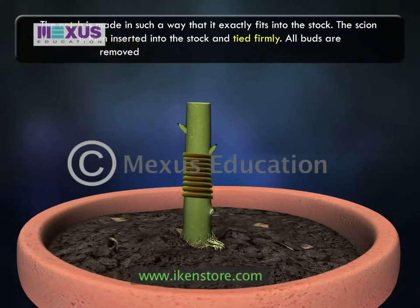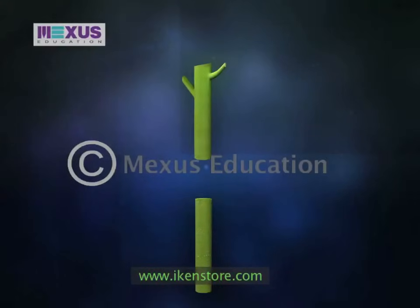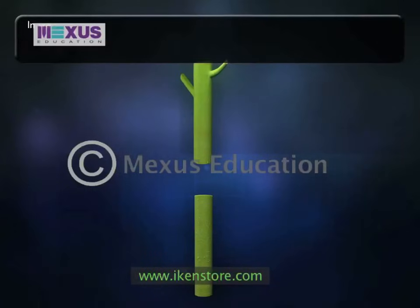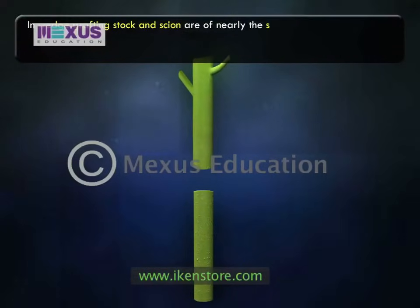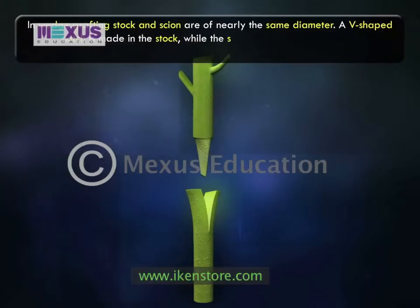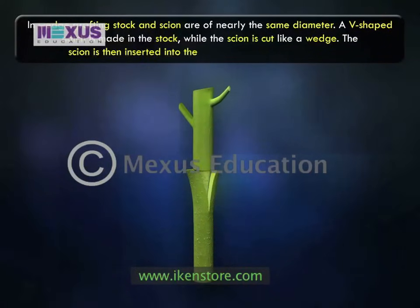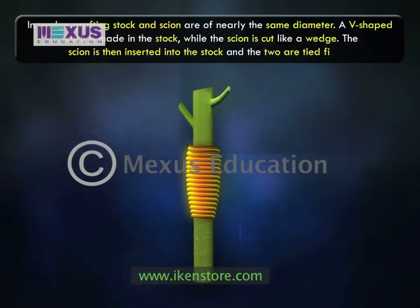All buds are removed from the stock but retained on the scion. In the second type of scion grafting, that is wedge grafting, the stock and scion are of nearly the same diameter. A V-shaped notch is made in the stock while the scion is cut like a wedge. The scion is then inserted into the stock and the two are tied firmly.